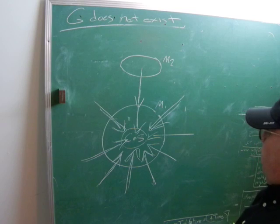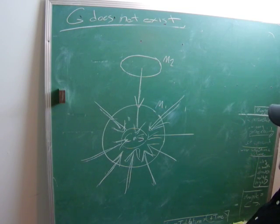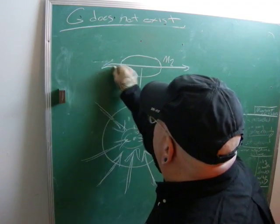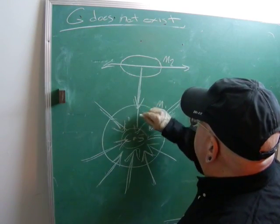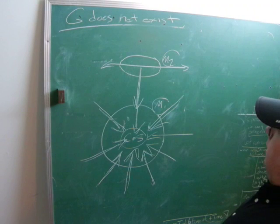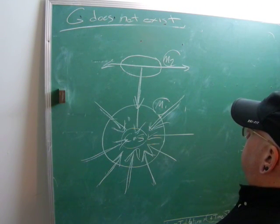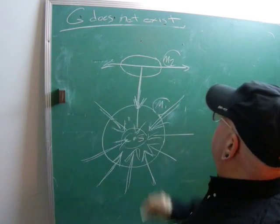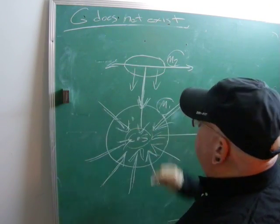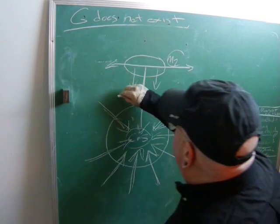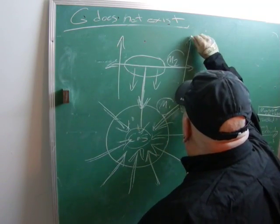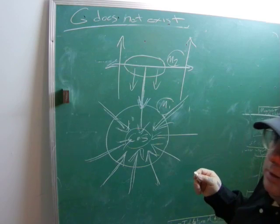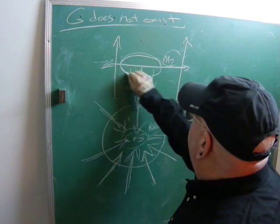What happens is there's a change in the co-gravitational field by changing the co-gravitational field of mass 2. Here we have acceleration of mass 2 to mass 1. What we have is a reduction in acceleration of mass 2 to mass 1 by changing the co-gravitational field. Remember, gravity is just counter space.